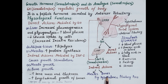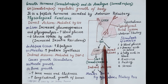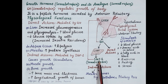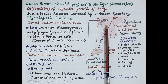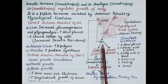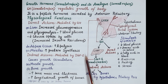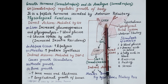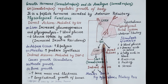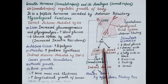A rise in blood levels of growth hormone or IGF-1 above normal sends negative feedback signals to the hypothalamus, which reduces secretion of GHRH, further reducing secretion of growth hormone and bringing it back to normal. Similarly, a fall in blood levels of growth hormone or IGF-1 below normal sends positive feedback signals to the hypothalamus, which increases secretion of GHRH, further increasing secretion of growth hormone and bringing it towards normal. This is how blood levels of growth hormone are maintained as per the body's requirement.